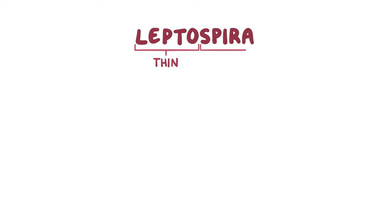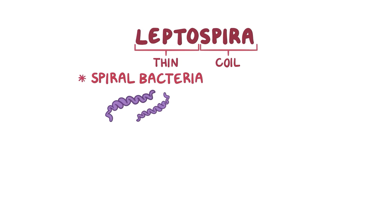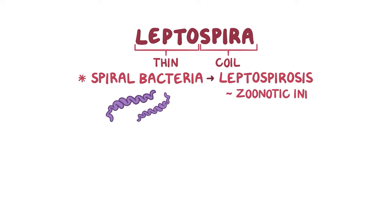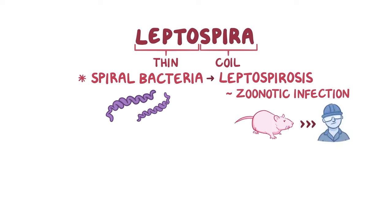With leptospira, lepto means thin and spira means coil. So leptospira is a genus of spiral bacteria known to cause leptospirosis, a zoonotic infection, meaning it can be transmitted from animals like rodents to humans.